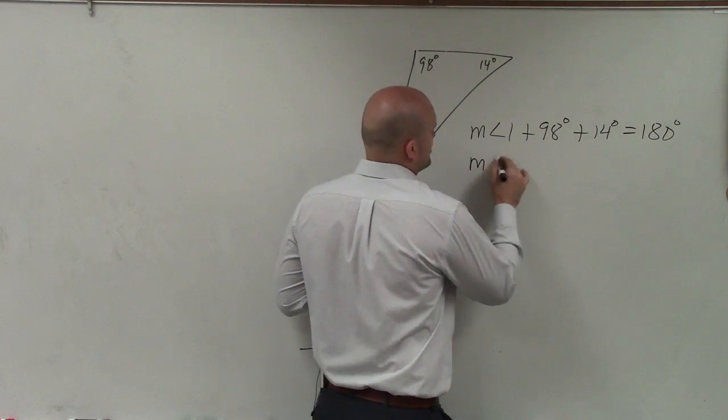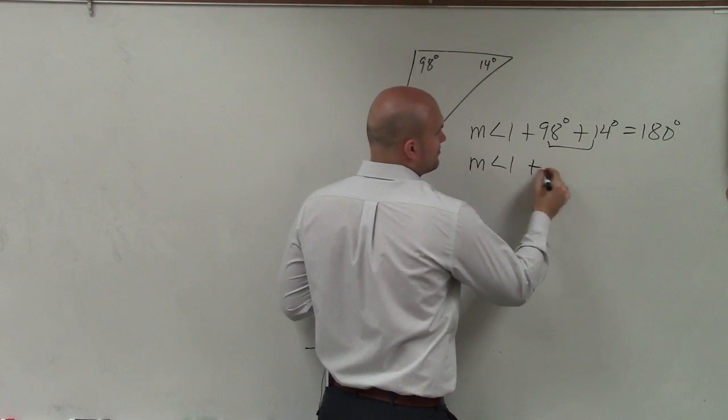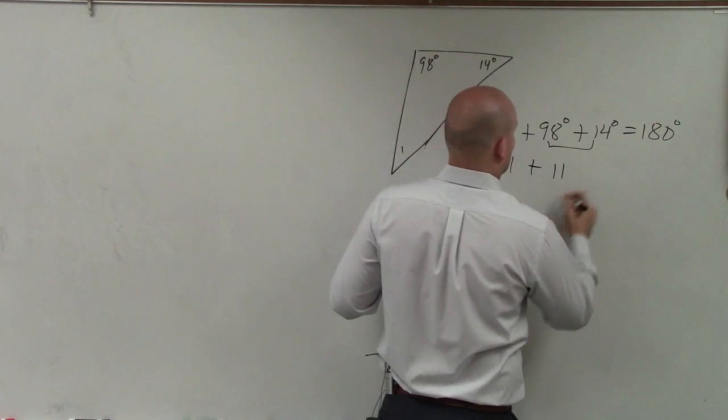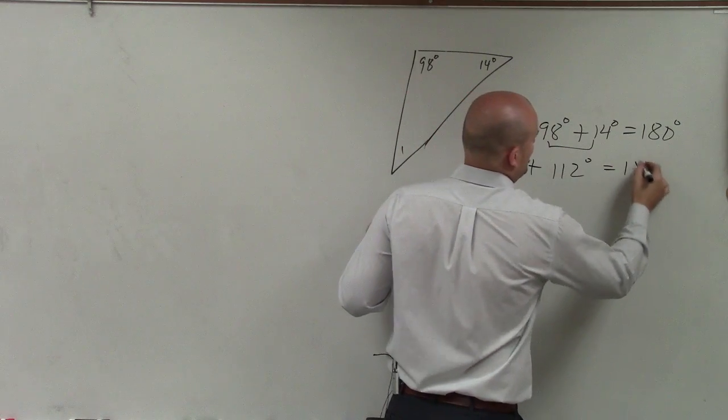So therefore, measure of angle 1. Now I can combine my two angles, that's going to be 112 degrees equals 180 degrees.